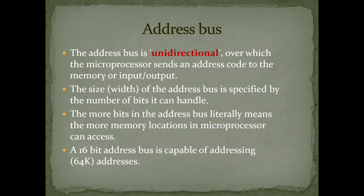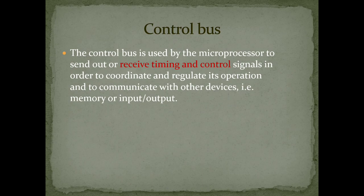The address bus is unidirectional. You send two important parameters: one is the size and the other is the location. These two are very important — if you want to send some data, you have to mention the size and the location where the particular data is to be placed. That is what the address bus carries.